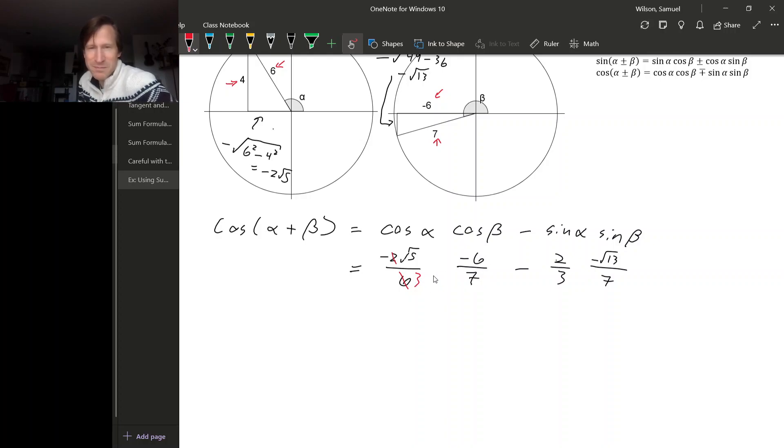I want to keep these over a common denominator so I can put these fractions together. So this is, let's see, negative times negative is positive, so it looks like 6√5, minus—but it's minus and then another negative—so plus 2√13. And then the denominator is 3 × 7 = 21. So there's cos(α + β).